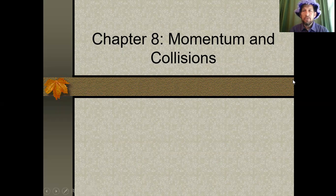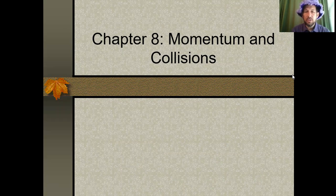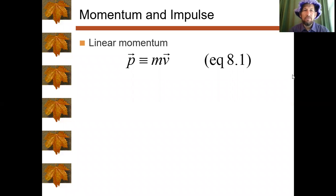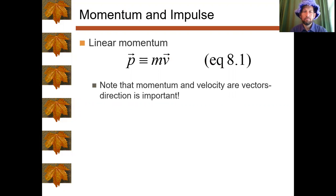We're starting into chapter eight, and the topic is momentum, impulse, and collisions. When we say momentum in this chapter, we're talking specifically about linear momentum — there's also angular momentum, which is fun, but we won't get to that this semester. Linear momentum is a vector defined with the letter p, and it equals mass times velocity.